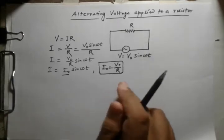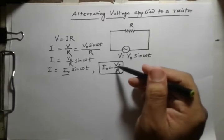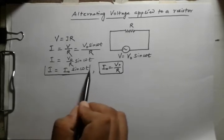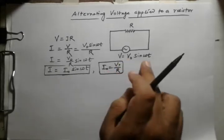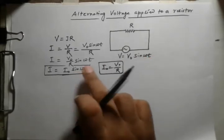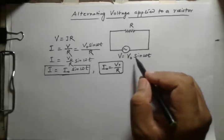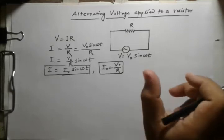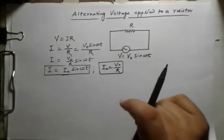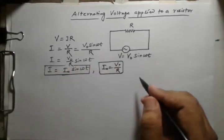You can understand the peak value of the current is less than the peak value of the voltage. The current equation is i equal to i₀ sine omega t and voltage is V equal to V₀ sine omega t. In this case there is no phase difference, because they have the same angle omega t. Phase difference would exist if there were a phi term, like V₀ sine (omega t + phi).